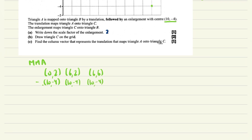Subtracting the center from each point: (0-10, 2-(-4)) = (-10, 6); (6-10, 2-(-4)) = (-4, 6); (6-10, 6-(-4)) = (-4, 10). Now multiply by the scale factor of 1/2 to get the object coordinates before adding the center back.